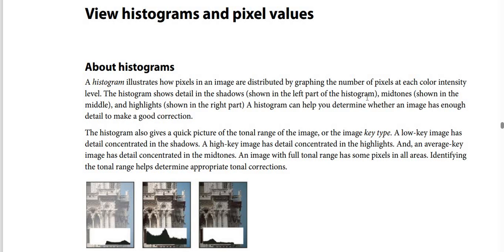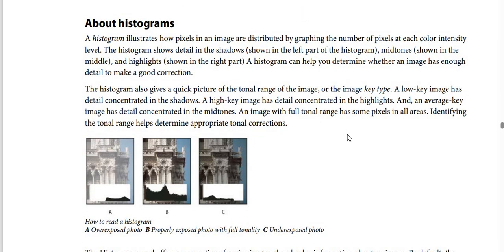The histogram shows detail in the shadows, shown in the left part of the histogram, midtones shown in the middle, and highlights shown in the right part. The histogram can help you determine whether an image has enough detail to make a good correction, and also gives a quick picture of the tonal range of the image, or the image key type.